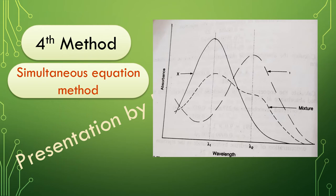In the simultaneous equation method, we will not be separating the two drugs — physical separation is not done. Both drugs will be present in the final dilution of the sample. In the presence of both drugs, we will mathematically calculate the content of each drug. The wavelengths shown, lambda 1 and lambda 2, are the wavelengths at which we measure absorbance of the sample, and they are the lambda max of both drugs. So, in the simultaneous equation method, measurement of the sample is done at the lambda max of both drugs present in the sample.